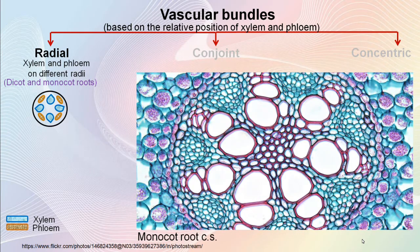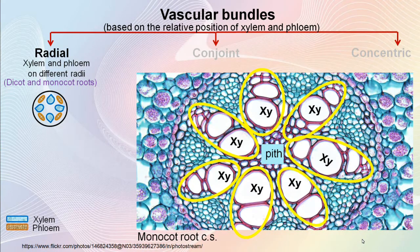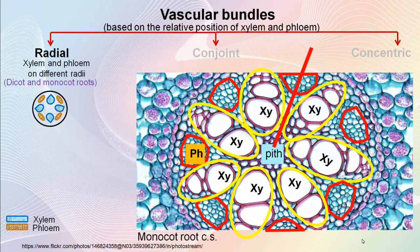In this cross section of a monocot root, you can see a pith in the centre of the root. Here is the xylem group and in total there are seven xylem groups in this cross section. Here is the phloem group and like this there are seven phloem groups alternating the seven xylem groups. So here the xylem and phloem are present on different radii alternating with each other.